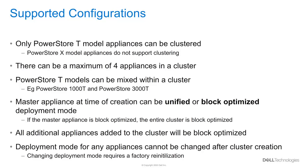At the time of creation, the master appliance can be configured as either a unified or block-optimized appliance. Once this is selected, the configuration cannot be changed. Any additional appliances that are included or added into the cluster will automatically be converted to block-optimized. If you wish to change the deployment mode of an appliance, it must be removed from the cluster and a factory reinitialization performed. If you plan to join it back into the cluster, note that it will automatically be converted to block-optimized.